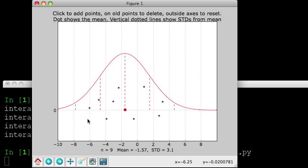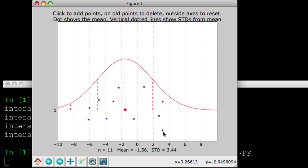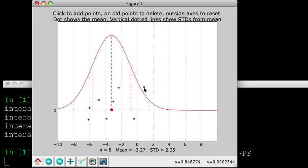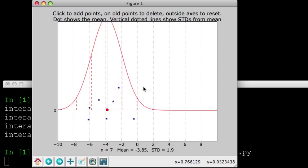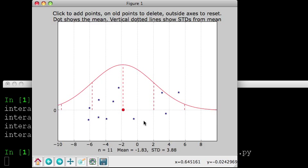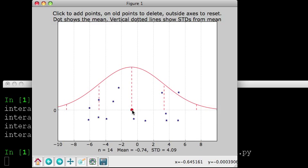So you can see I'm just adding different points, and if I click on an old point, then it deletes it. So you can just see how the normal distribution changes as I put different data on it. And the mean here is shown by this big red dot, and the standard deviations are these vertical lines here.